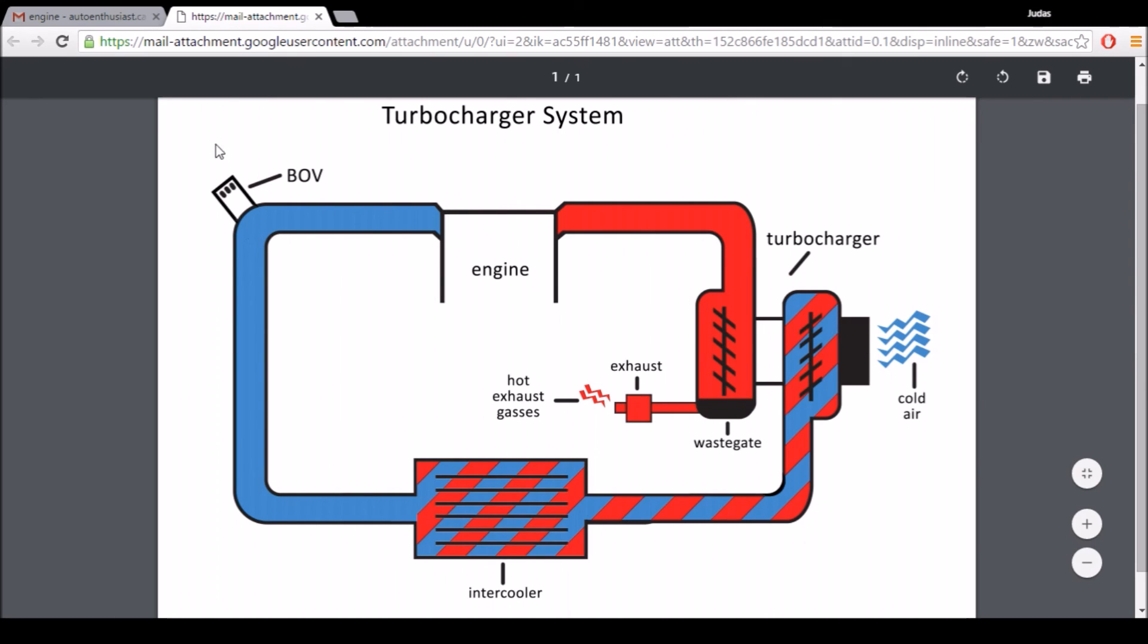It allows pressurized air to escape when we hit the full system pressure when there is no acceleration, when the throttle body plate is closed.